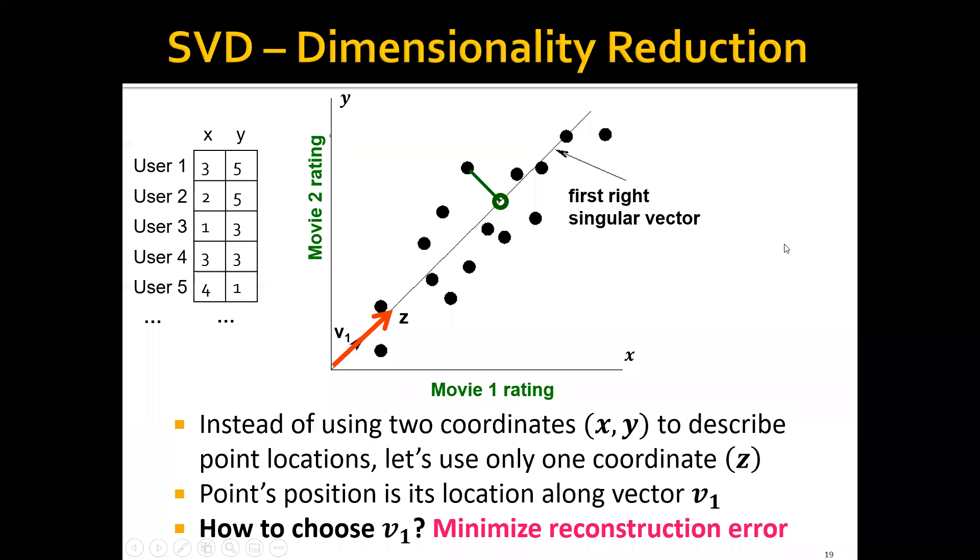Until now, we have only talked about SVD itself, but how do we actually perform dimensionality reduction using SVD? Going back to the previous user movie example, let's say that we have a lot of points and each point represents one user. The X coordinate of a point represents the user's rating for movie one and the Y coordinate represents the user's rating for movie two.